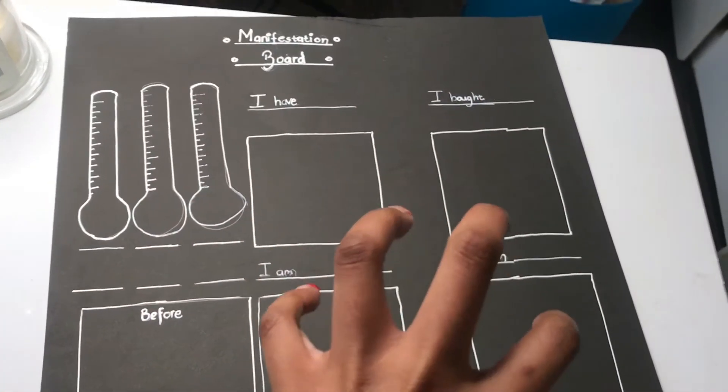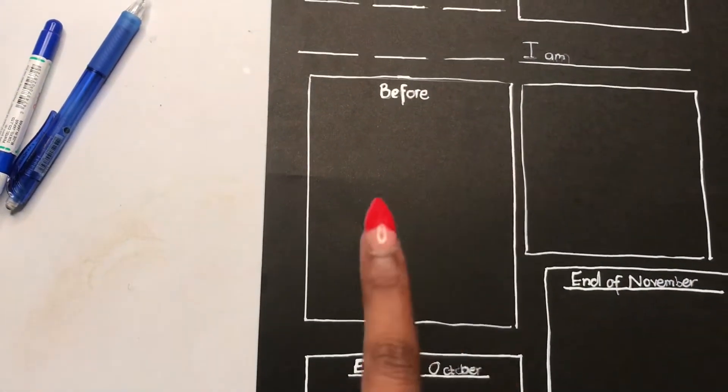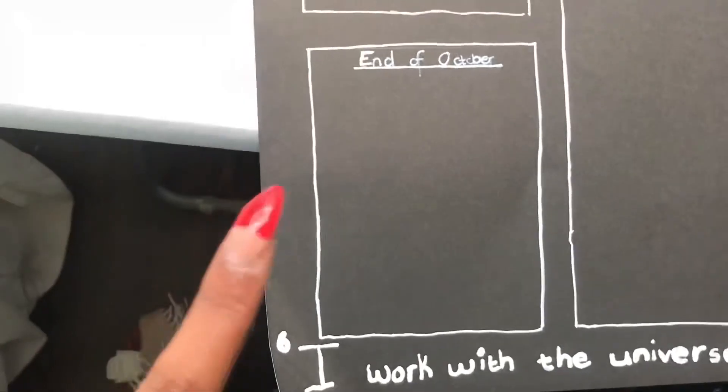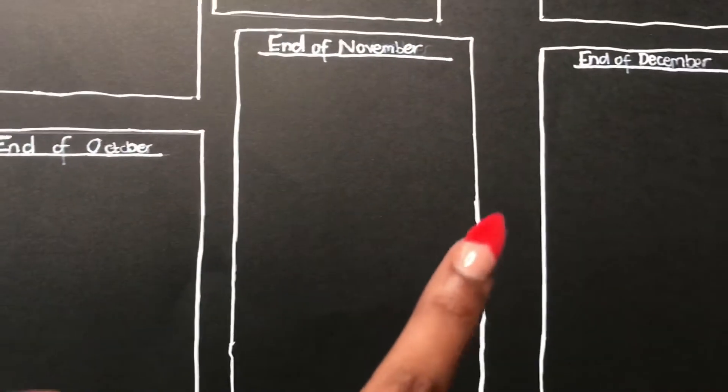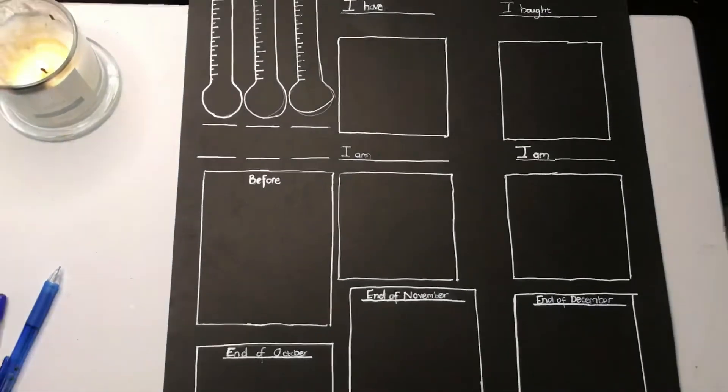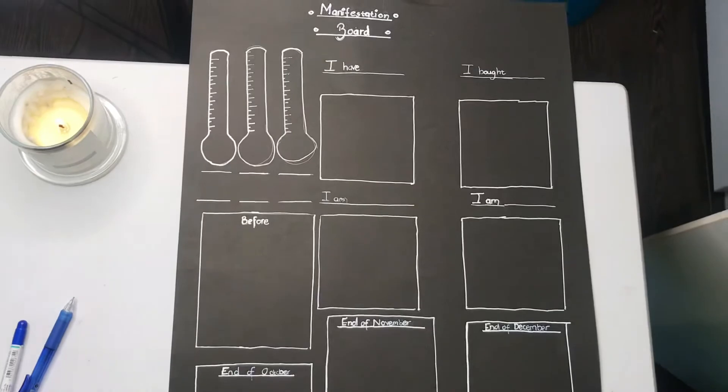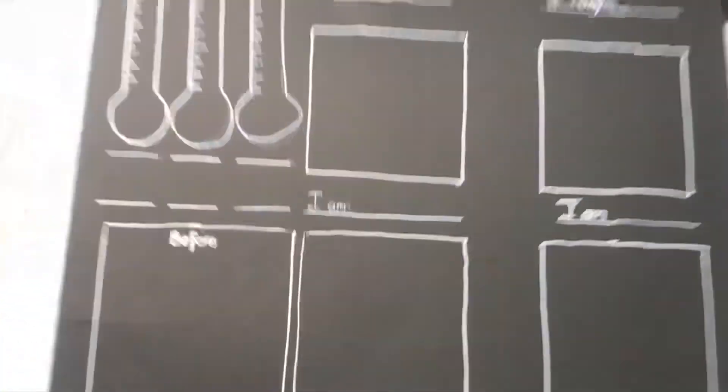And then we have placements for where I'm going to be putting my body goals—pictures, side, front, and back view of where I am now, which is before, end of October, end of November, and then end of December. So honeys, let's get straight into it. It's January 2022, here we come!